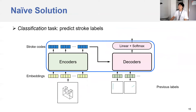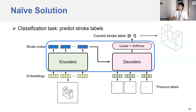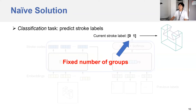Motivated by this observation, a naive solution is to cast our problem as a classification problem. Specifically, given the previous labels, the transformer predicts the stroke label for each stroke. For this case, there are two groups, and the current stroke belongs to the second group. After we obtain all the stroke labels, we can assemble the groups of strokes. However, this solution requires that the number of groups is fixed, which is not achievable.